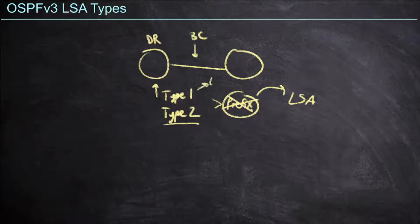As such, type 1s are focused primarily on the links, the statuses, the cost of those links. And type 2s are going to be focused on the routers that are attached to my broadcast domain. And again, we're sending no prefixes as part of these two LSA types.